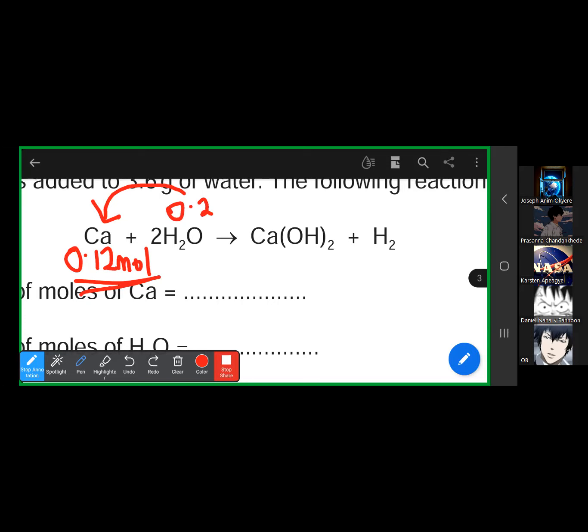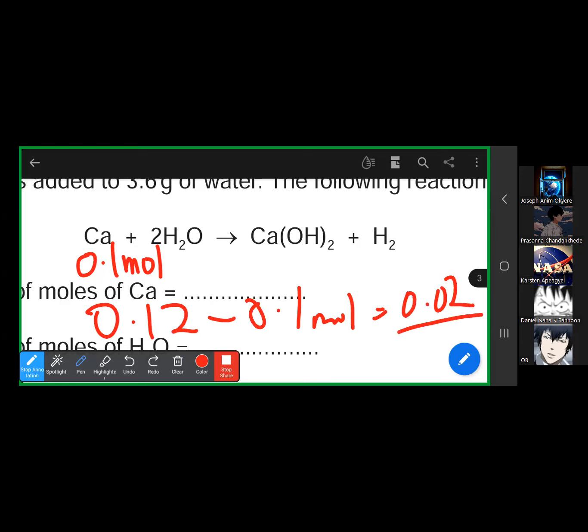Calcium is in excess, meaning not all was used. If 0.2 mole of water finishes, let's determine how much moles of calcium were used. I'm going to use water's moles. Here is one, so one over two times 0.2 equals 0.1. Out of the 0.12 calcium, only 0.1 moles were used for the reaction. What was left? 0.12 minus 0.1, which gives us 0.02. So Carsten, for your information, 0.02 moles of calcium remain. Do you understand? Yes, sir.